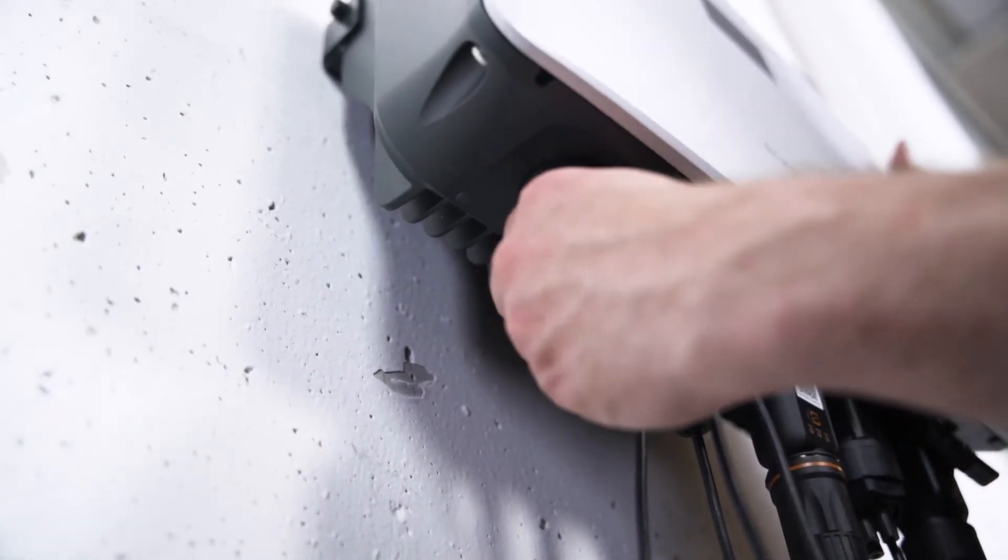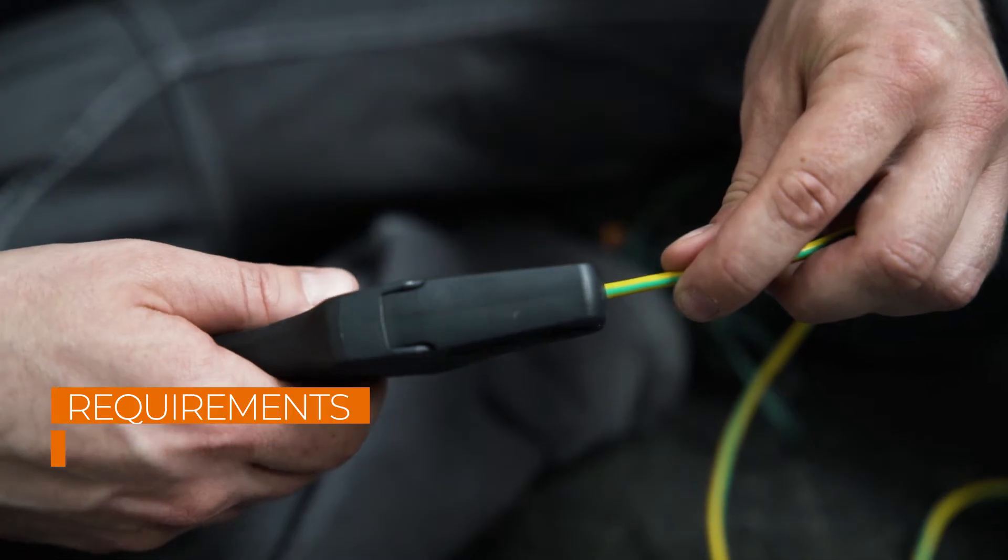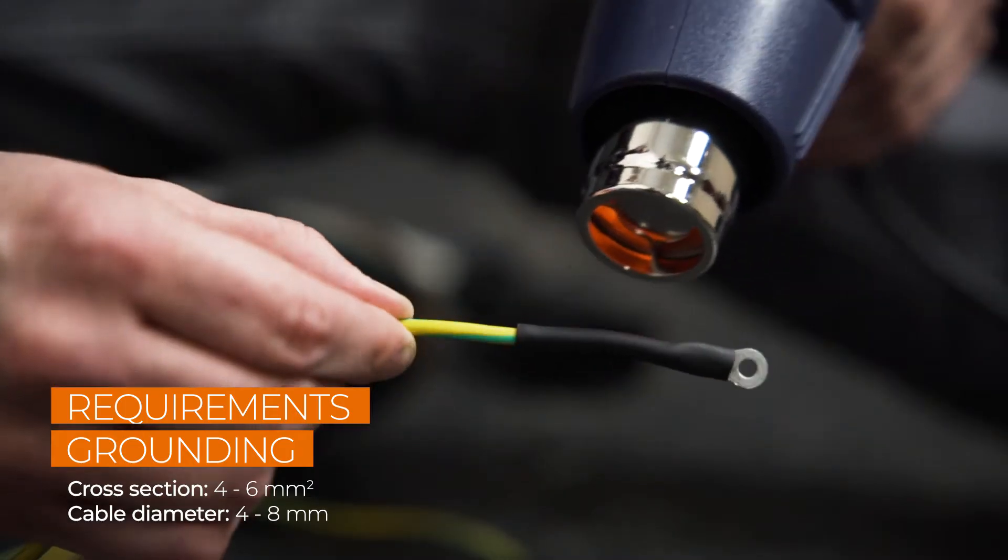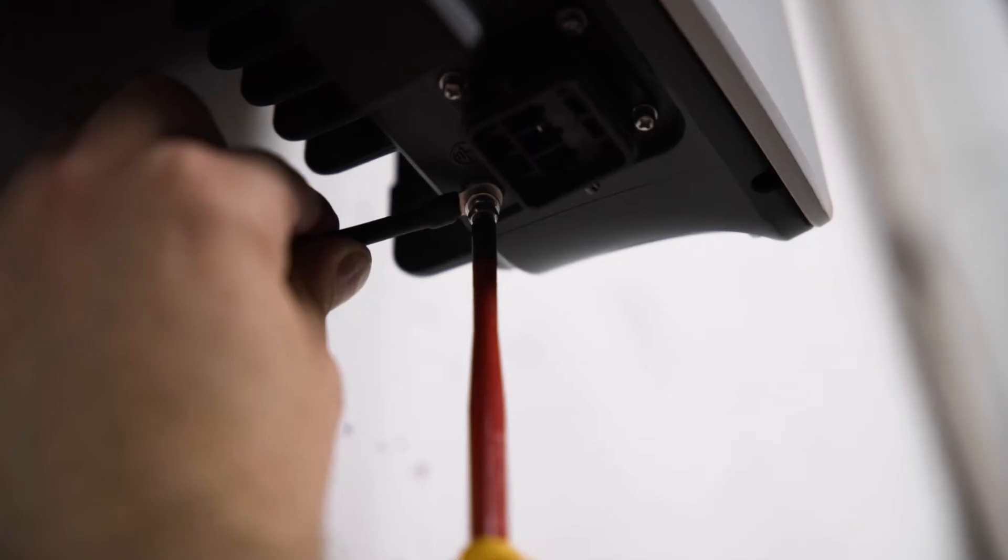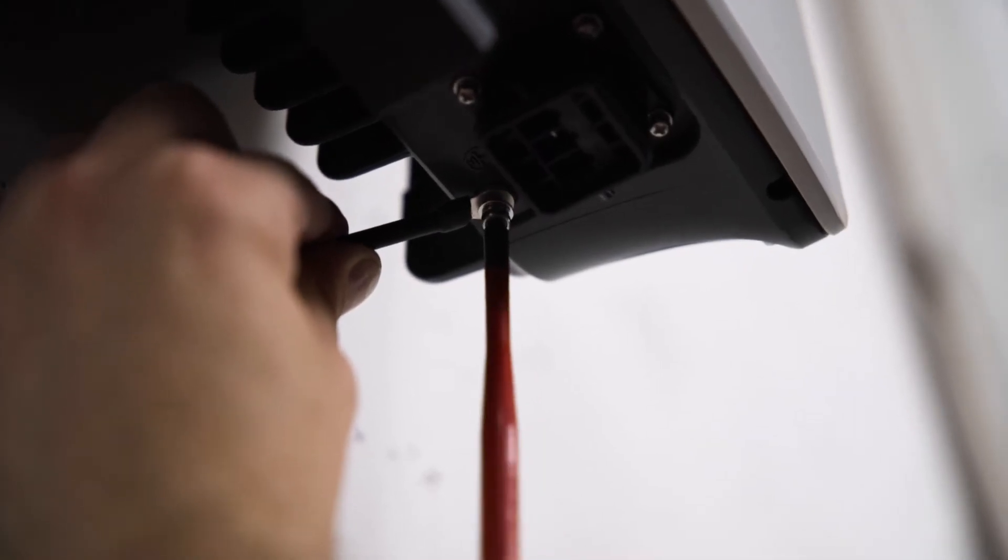Furthermore, you have to set the DC switch at the bottom of the inverter to OFF. Now, let's connect the inverter to ground. There is a grounding terminal at the bottom of the inverter. Connect it to the general grounding of the house.